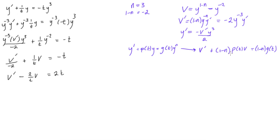Okay, so let's look at this here before we continue on. We have, we're looking at this part right here. So let's just look at this. So we have v prime, v prime, plus 1 minus n times p of t. Well, 1 minus n was negative 2, and p of t was 1 over t. So we get minus 2 over t. So that's what we have.